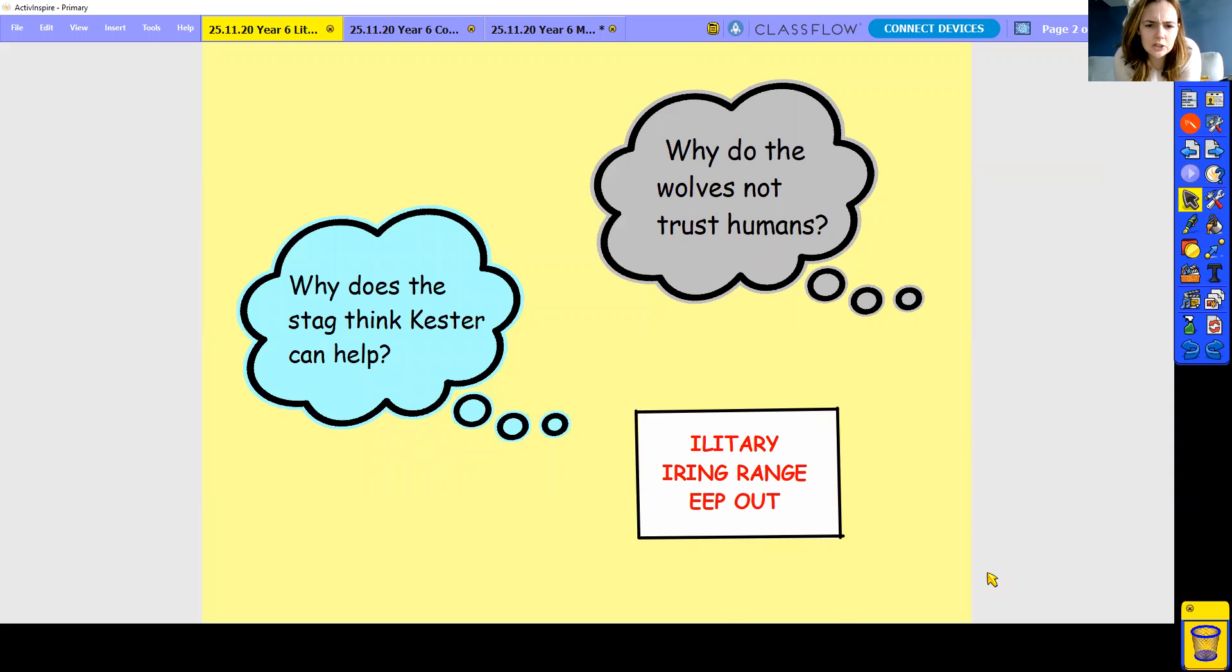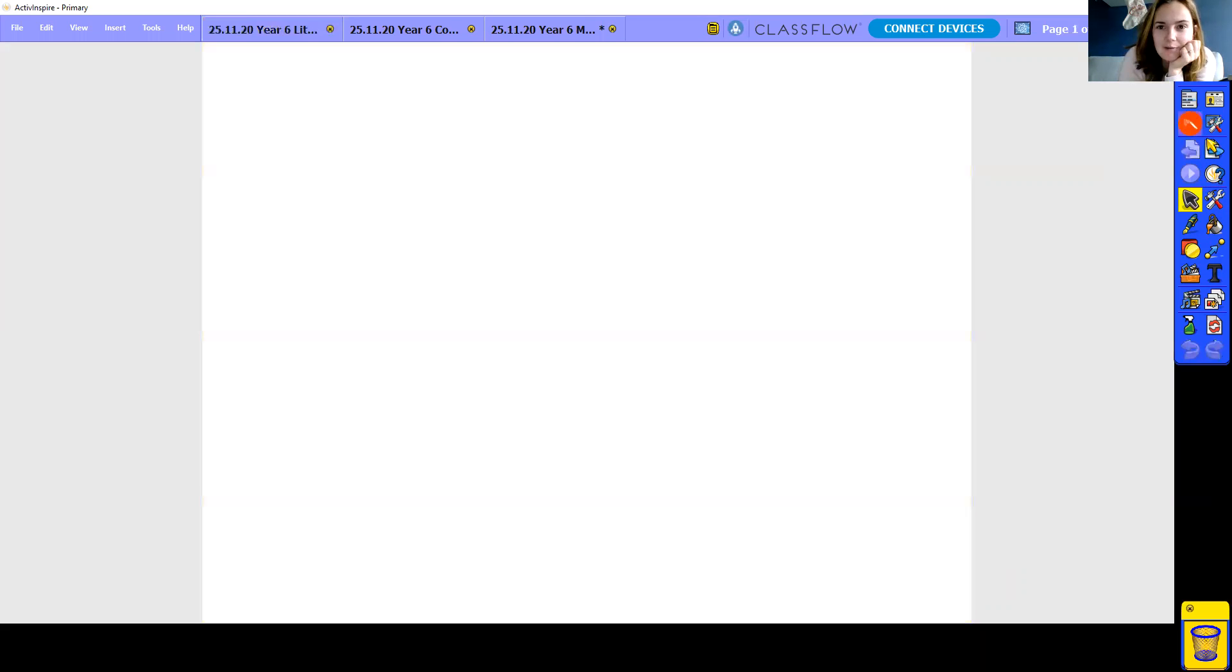Here, illiterate, eyering, range, eep out. Hmm, some of the letters have been scratched off. Does anyone have any ideas what it could be? Have a write down. We'll find out when we do our next little bit. Okay, so what do we think it could be? There's some missing letters. There's a missing letter here, here and here. Wonder if you can work it out. Write it down in your piece of paper and I will look at it.